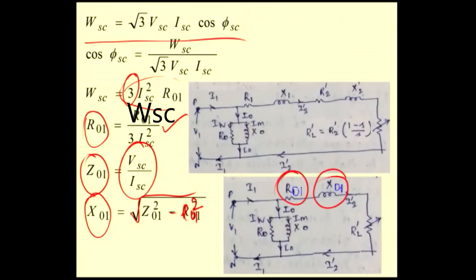By conducting the blocked rotor test, you are able to calculate R01 and X01. R01 is nothing but R1 plus R2 dash, and X01 is nothing but X1 plus X2 dash. Once you have these values — R01, X01, R0, and X0 — you can easily analyze the equivalent circuit.